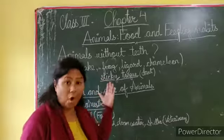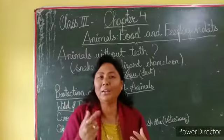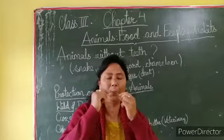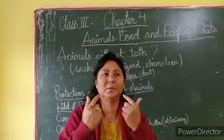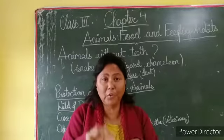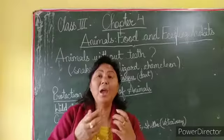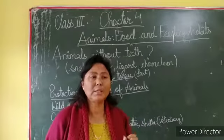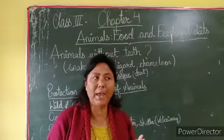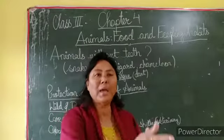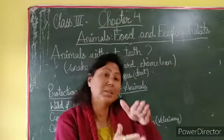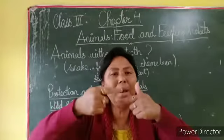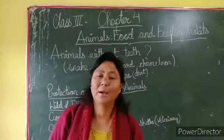For example, frogs and lizards have a sticky tongue. Our tongue has the back portion attached and the front portion free. But in the case of frogs and lizards, it's the opposite - the back portion is free and the front portion is attached. So they sit very quietly, and when they see any insect, they dart - they throw out their tongue. Since the tongue is very sticky, the insect sticks to it. Then they roll the tongue back and swallow the insect.